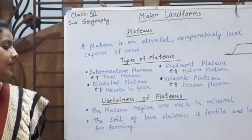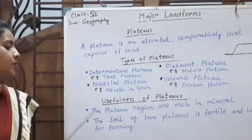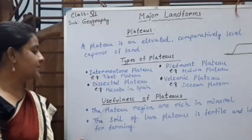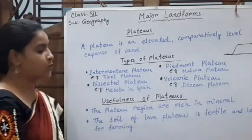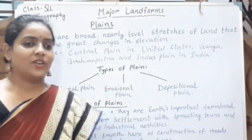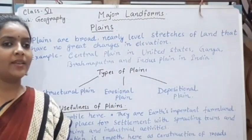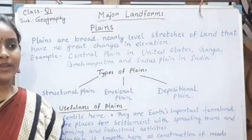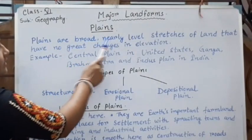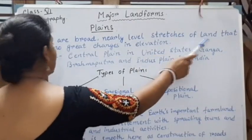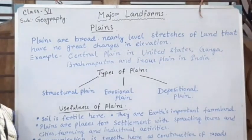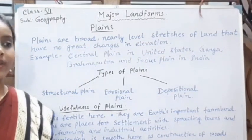The usefulness of plateaus: plateau regions are rich in minerals. The soil of lava plateaus, that is volcanic plateaus, is fertile and ideal for farming. Now comes the plains. Plains are familiar to us because we all live in a plain region. Plains are broad, nearly level stretches of land that have no great changes in elevation. You can see your surroundings — there are no changes in elevation, it is flat all over.